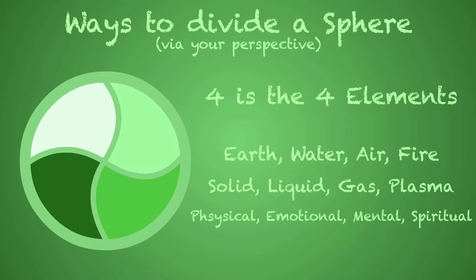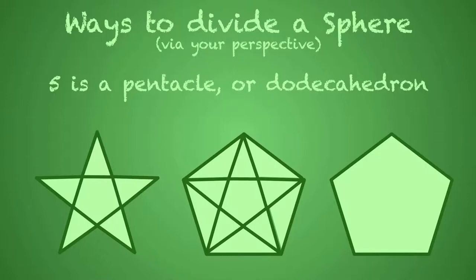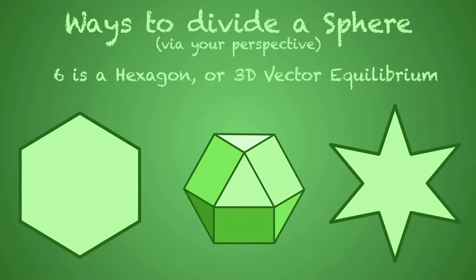If you look through four, you see the four elements. They are the physical, mental, emotional, or spiritual — or perhaps 1111 on your clock. We can continue. Five is the pentacle, as well as the dodecahedron. Six is the vector equilibrium, or cube octahedron, which we'll talk about in a few minutes.